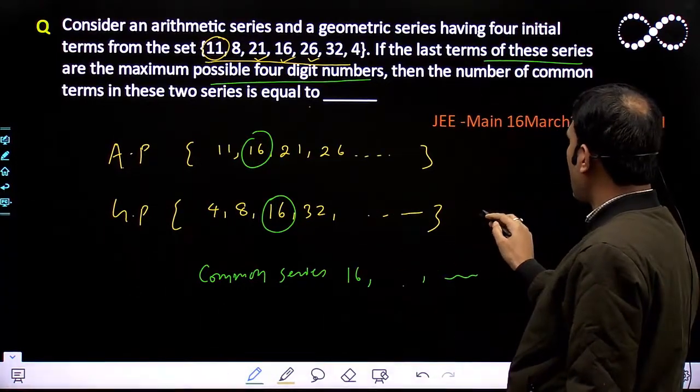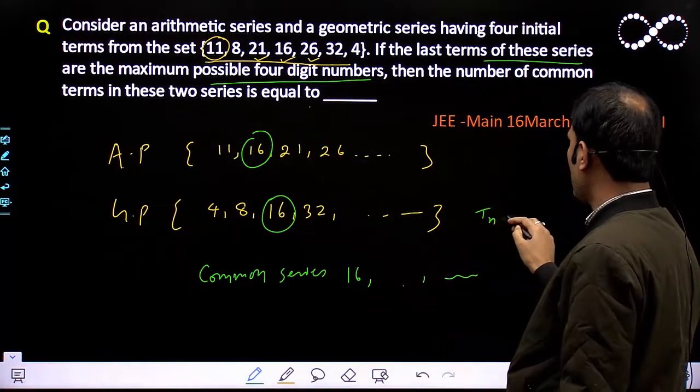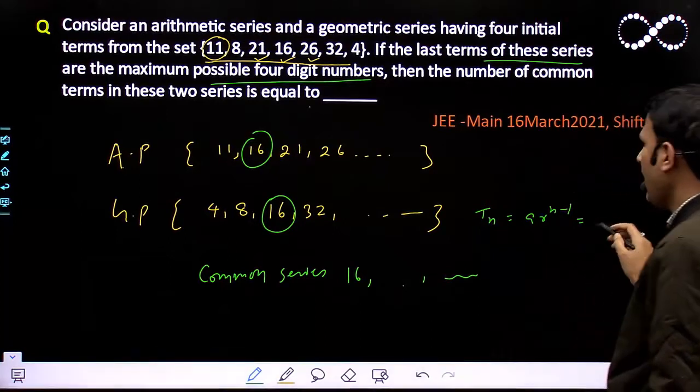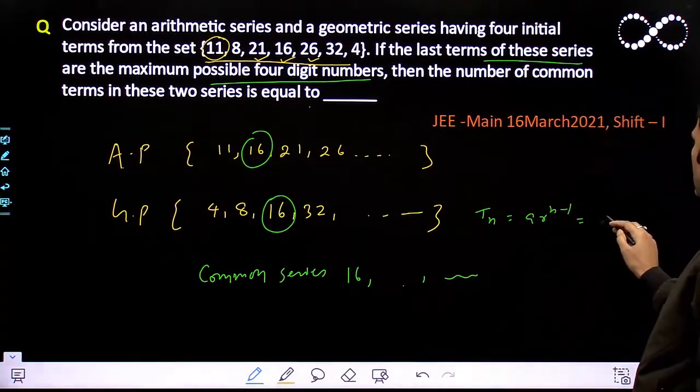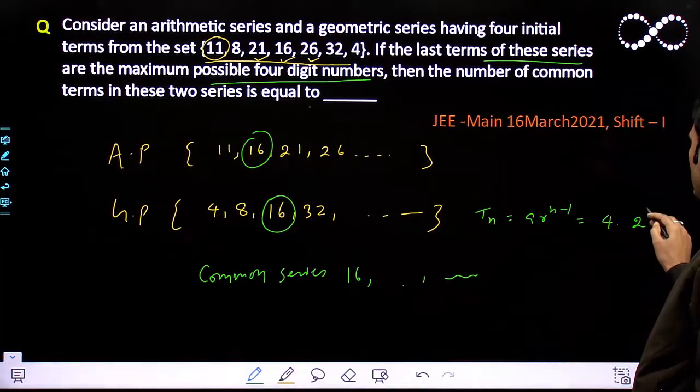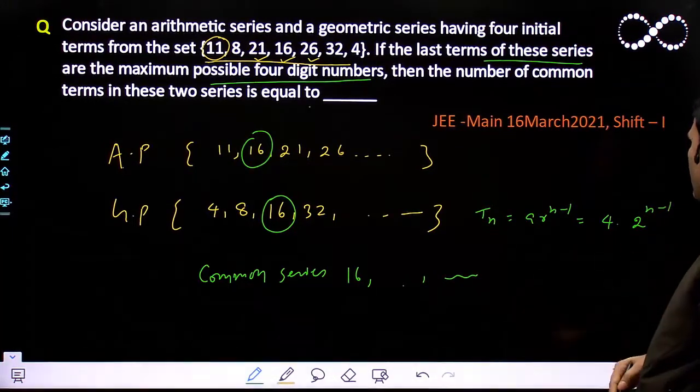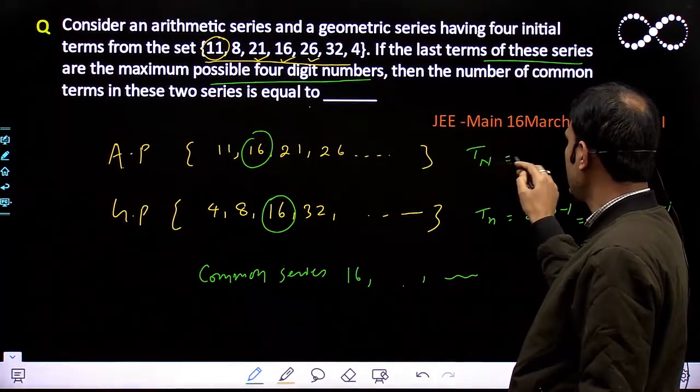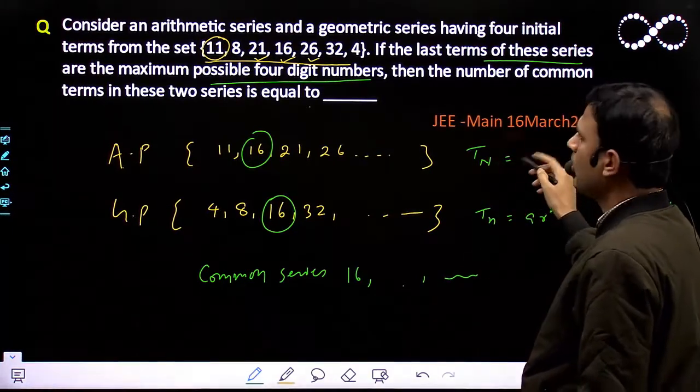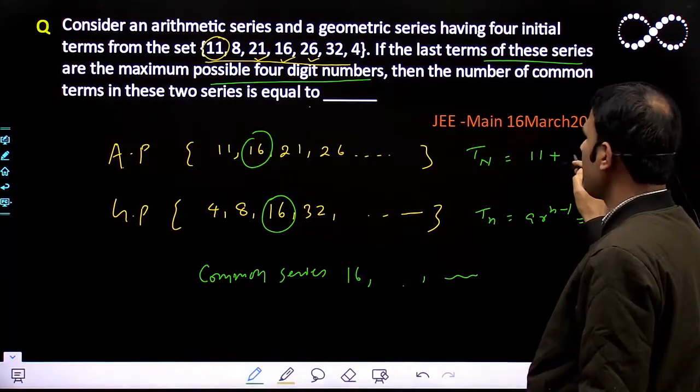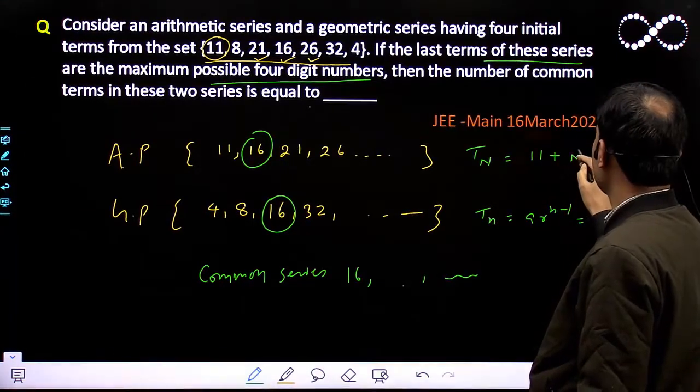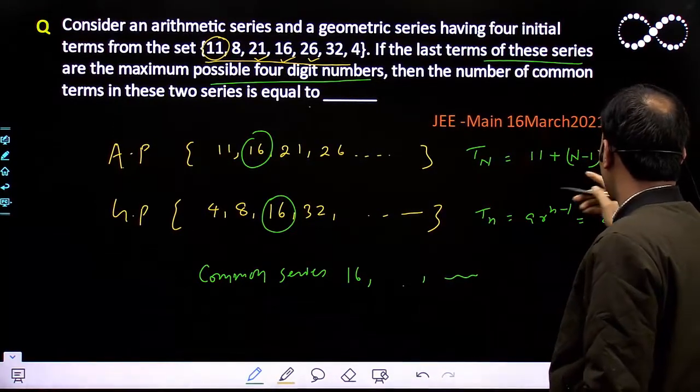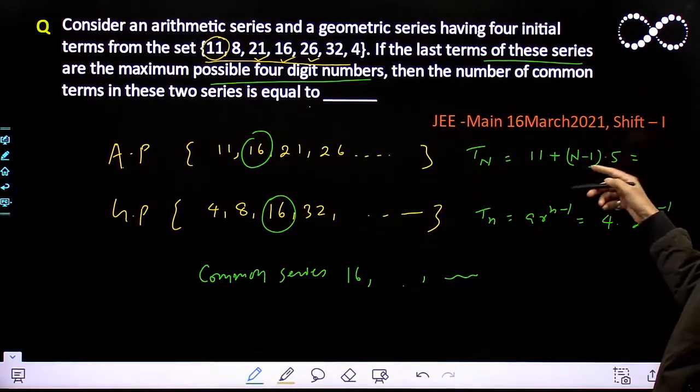In common series it's 16. After this we'll see whatever terms come, and the last one will be a four-digit term. From here to here, how many numbers are there, you have to calculate. Here the nth term will be a × r^(n-1), that means a is 4, so 4 × 2^(n-1). And for AP...